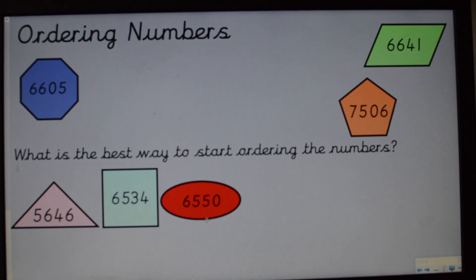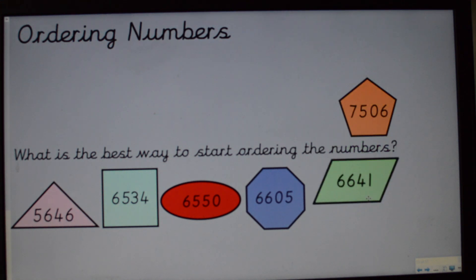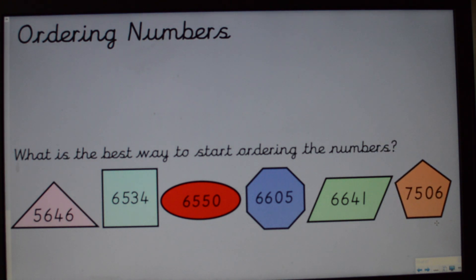Okay, let's have a look then at my octagon and my parallelogram. Both of them start with six thousand, both of them have six hundreds, but let's look at those tens. The octagon has zero tens, and the parallelogram has four tens. So my octagon is the next number, followed by the parallelogram. Finally, it would be the pentagon, seven thousand, five hundred and six, because it's got the most thousands.